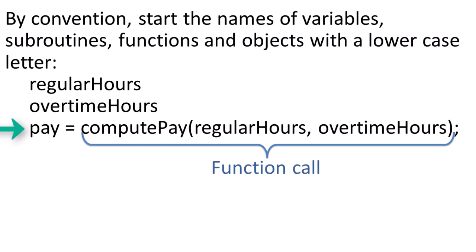Compute pay is the name of a function also called a method in object-oriented programming. The compute pay function is being passed two parameters, regular hours and overtime hours. The function should be written to accept these two parameters, compute and return the value for the paycheck so that it can be stored in the variable named pay using the equal sign assignment operator. More on that later.